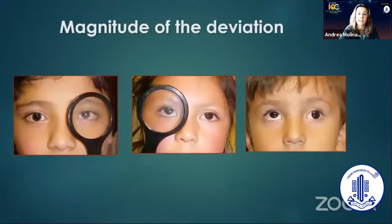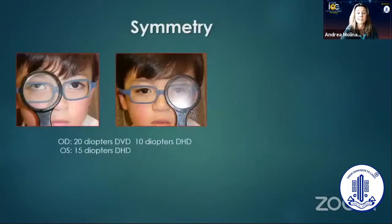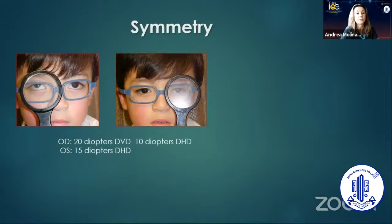The magnitude of the deviation is also very important to assess in order to plan how much surgery you will perform and on how many muscles. As you all know, DVD can be very asymmetric. For example, this case of a patient who had a DVD of 20 diopters on the right eye with a DHT of 10 diopters.